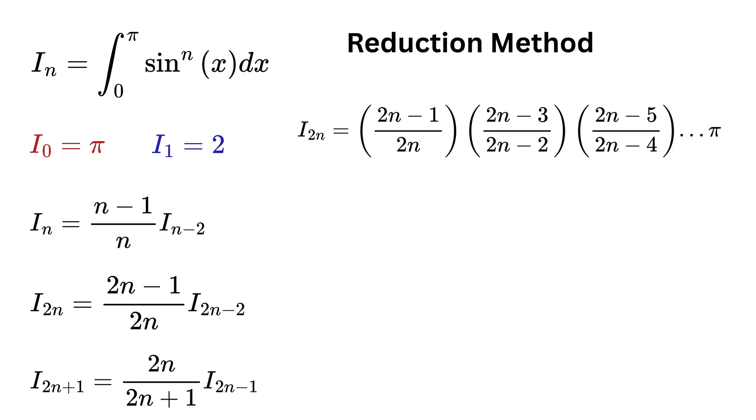In compact form, we can write this as pi times product of (2k-1)/(2k) where k goes from 1 to n. We will do similar thing for odd powers. In compact form we can write this as 2 times product of 2k/(2k+1) where k goes from 1 to n.